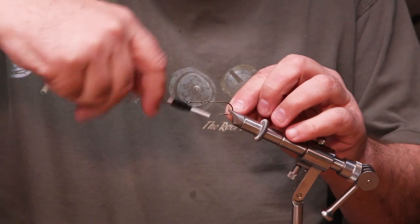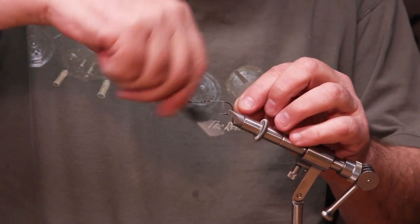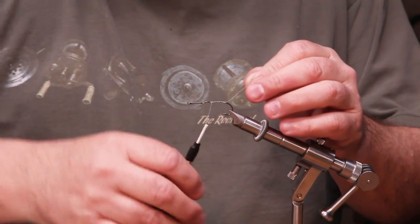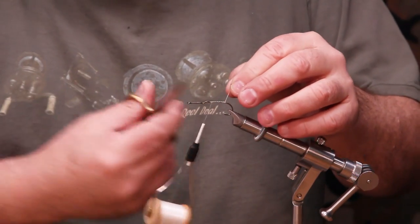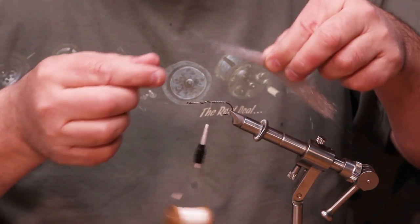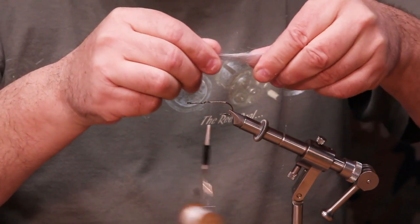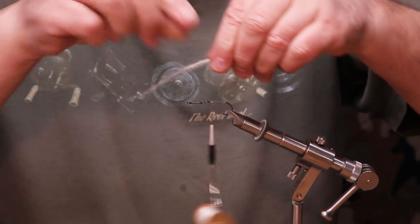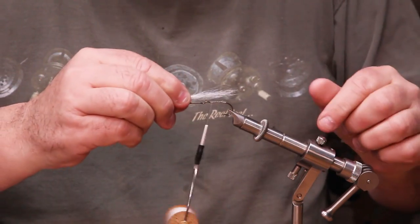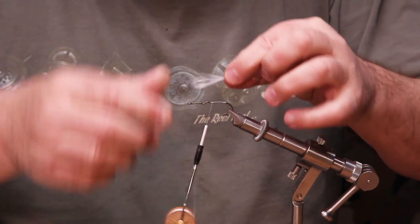We're going to start our white thread and put the tail on this fly. You don't want to build much bulk because you're putting the foam over the top of this and you don't want to have big lumps in the foam. So we're going to take a little of our nylon and pull some out and double it over. You want the tail to be about as long as the body of the fly.